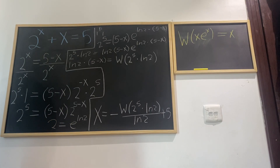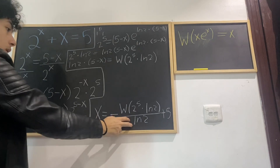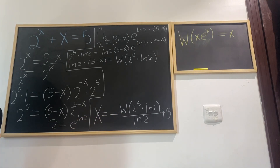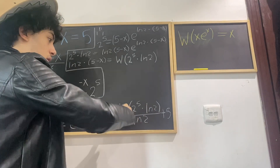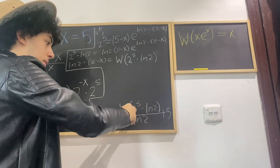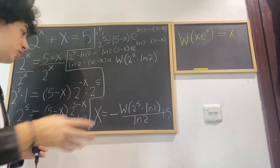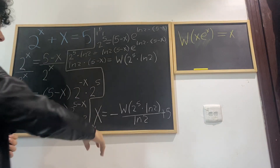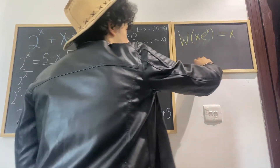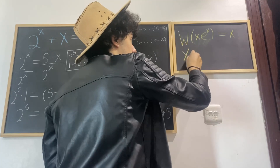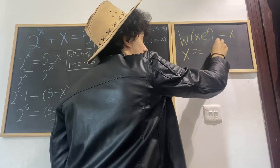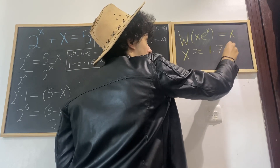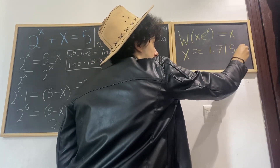This is our x, and just like that we have solved a Harvard entrance exam question. If we plug this into a Lambert W function calculator — because this is just the Lambert W function of a constant, which gives us a number — we get that x is approximately equal to 1.7156.